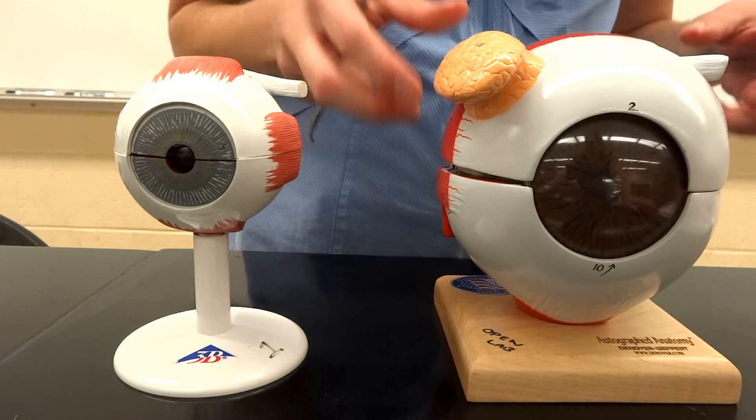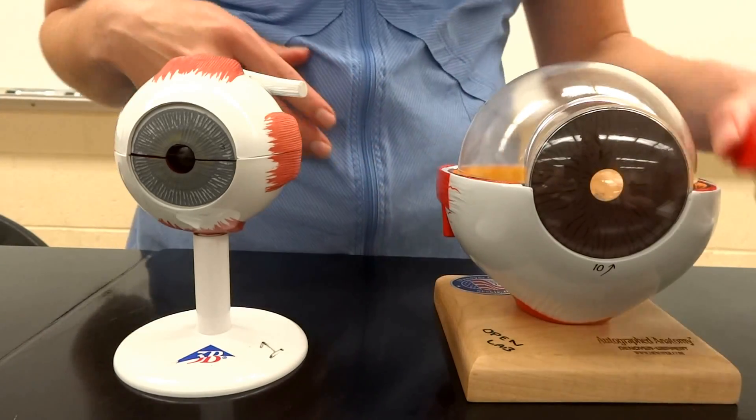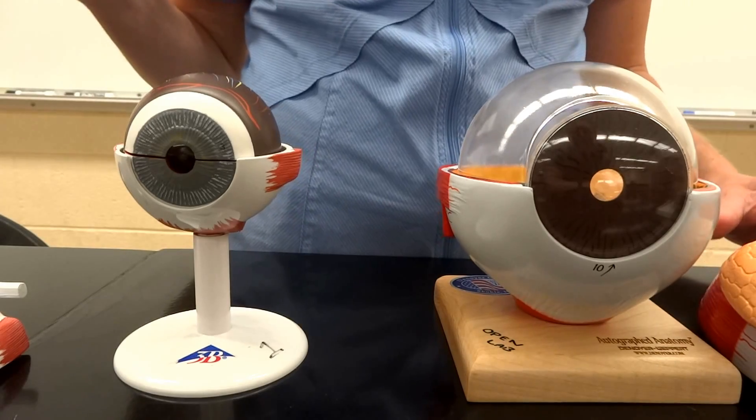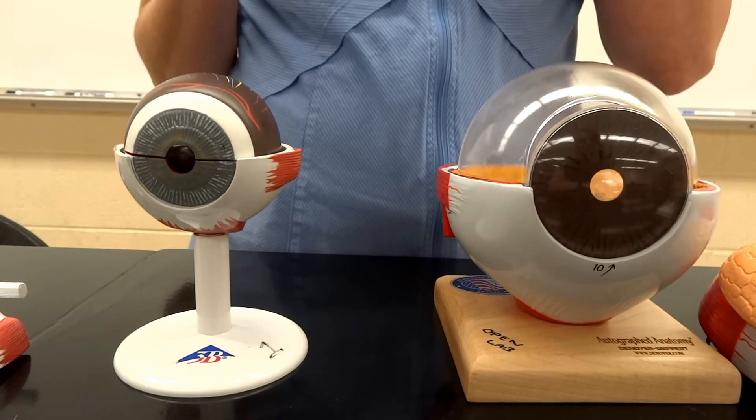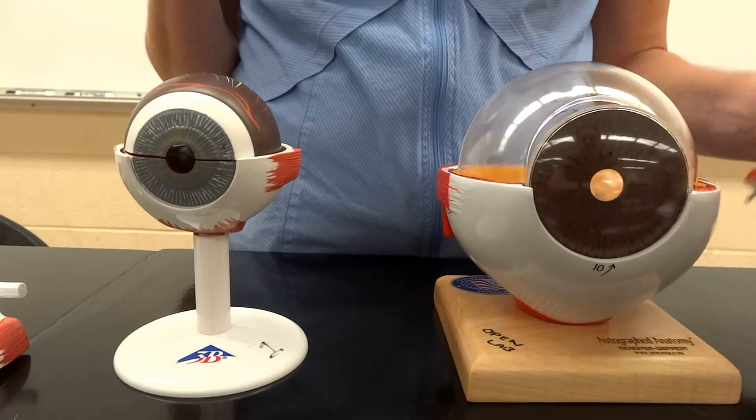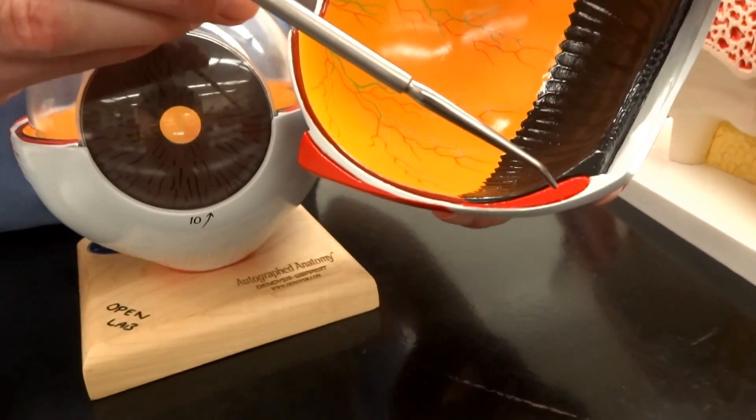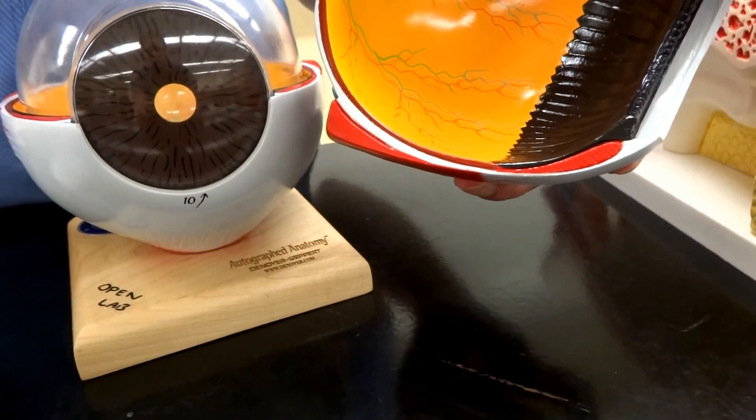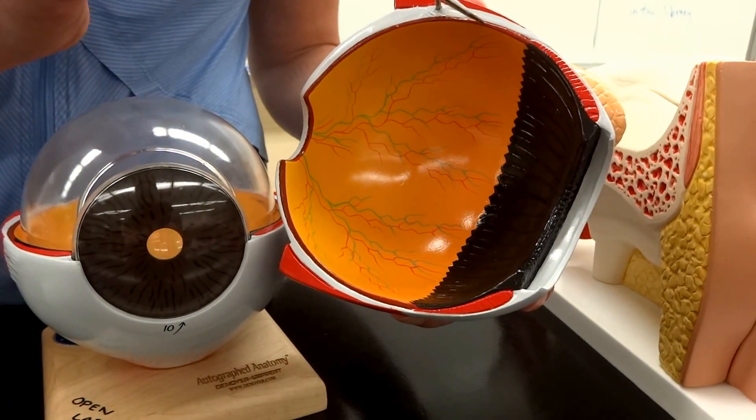So as we open up the eyes, we go from the fibrous tunic to the vascular tunic. So vascular means we're going to have what? Vessels. Vessels. Blood vessels running through it. So there's a few pieces on here, and starting with the choroid. So the choroid is going to be touching the sclera. And this model here, it is actually the reddish brown layer that's going to go all the way around. So not the yellow part, but the reddish layer that's in between it.